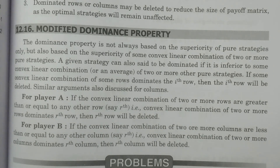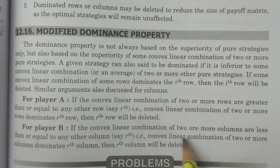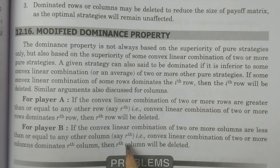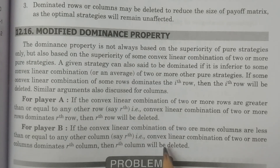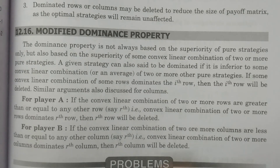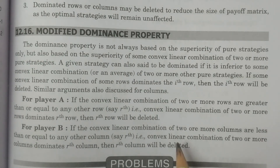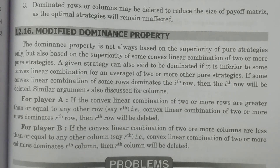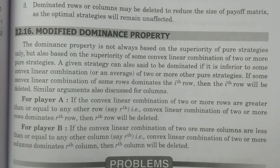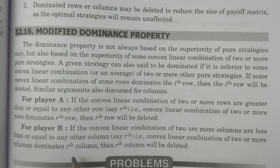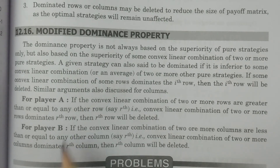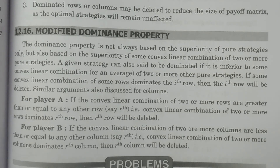Similarly, for player B: if the convex linear combination of two or more columns is less than or equal to any other column — say the r-th column — that is, the convex linear combination dominates the r-th column, then the r-th column will be deleted. The elements in the r-th column will always be less than the elements in the convex linear combination. Therefore, the r-th column, being an inferior strategy for player B, will be deleted. These are the arguments for player A and player B under the modified dominance principle.